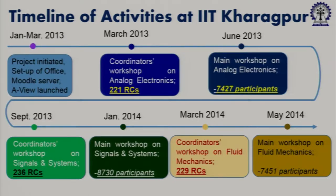He was instrumental in setting up the NMEICT office at IIT Kharagpur. In March, we started with the first workshop on analog electronics, where we had 221 remote centers and 7,427 participants in the main workshop. Subsequently in September 2013, we had another course from electronics — signals and systems — where 236 were the remote centers and we had around 8,730 participants.